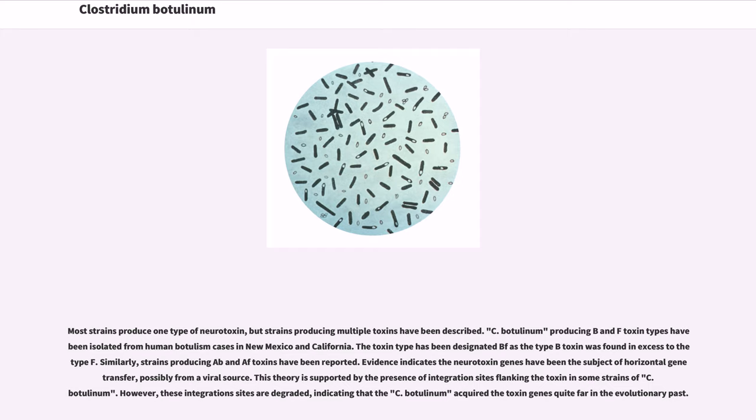C. botulinum producing B and F toxin types have been isolated from human botulism cases in New Mexico and California. The toxin type has been designated BF as the type B toxin was found in excess to type F. Similarly, strains producing AB and AF toxins have been reported. Evidence indicates the neurotoxin genes have been the subject of horizontal gene transfer, possibly from a viral source. This theory is supported by the presence of integration sites flanking the toxin in some strains of C. botulinum.